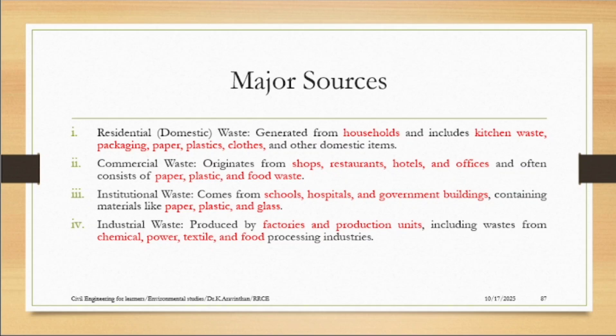When it comes to industry, there might be different types of waste. Apart from paper and plastic, there might be chemicals, and there might be textile-oriented fluids which may be toxic. These are different from the rest of the waste.